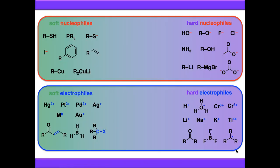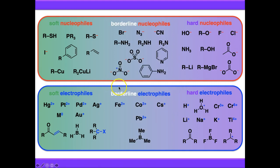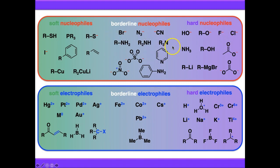As with anything, it is a spectrum — it's not a clear-cut distinction. There are generally hard nucleophiles, generally soft nucleophiles, but always a borderline in between. For example, bromide sits somewhere between iodide and the harder halides; amines tend to be borderline; and some metal ions fall between the two categories. So it's a spectrum, not simply black and white.